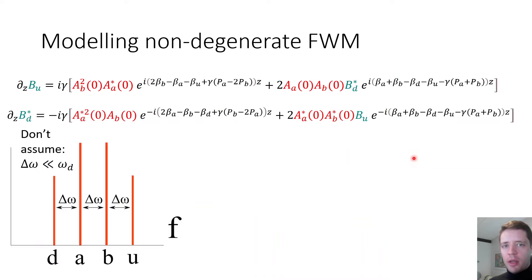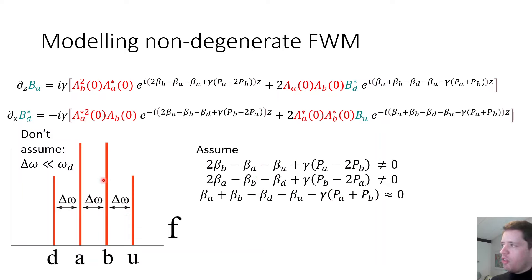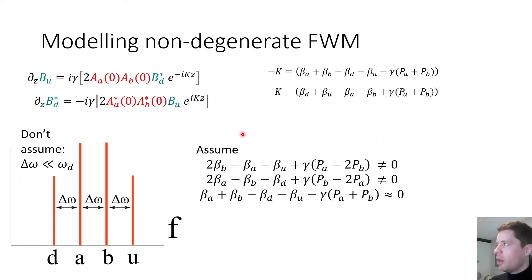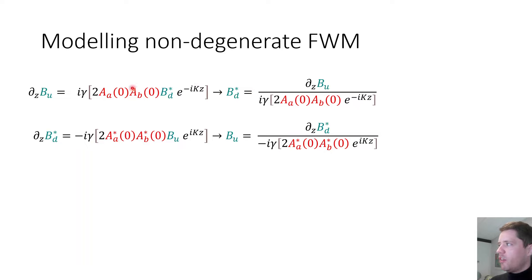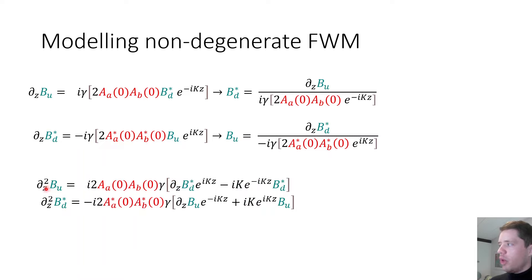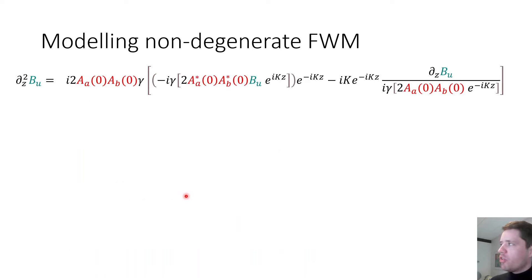For non-degenerate four-wave mixing with large frequency spacing, assuming the degenerate FWM terms are not phase matched and can be dropped, we retain two coupled equations for B_U and B_D*. Solving for each variable in turn and computing a second derivative allows decoupling. Although initially complex, many terms cancel and simplify, yielding an evolution equation for B_U that resembles a damped — or rather boosted — harmonic oscillator, since the field amplitude grows rather than decays with distance.